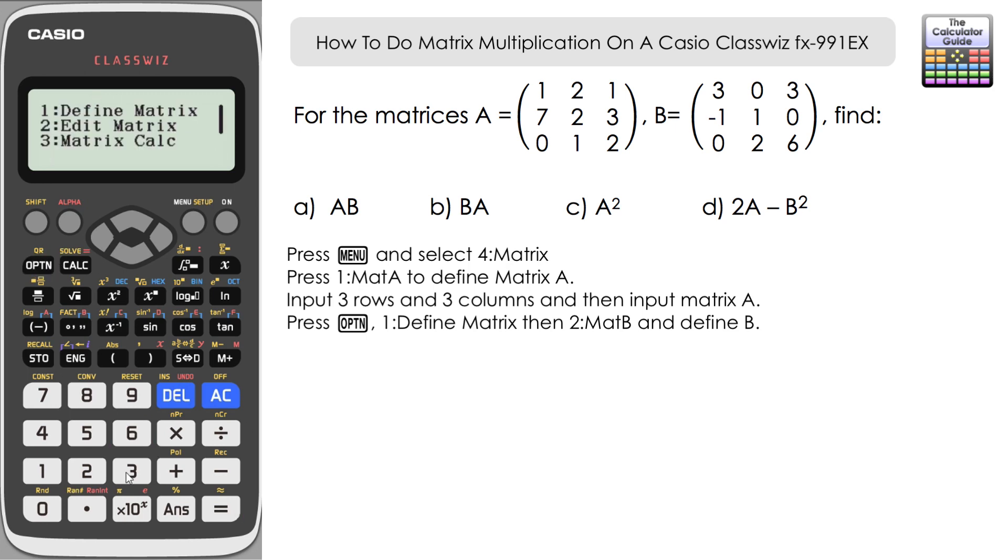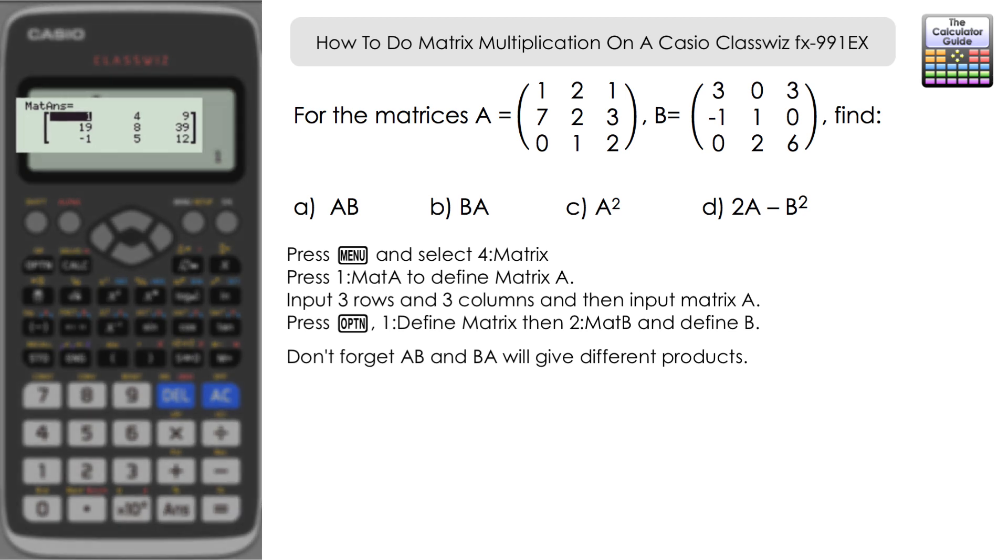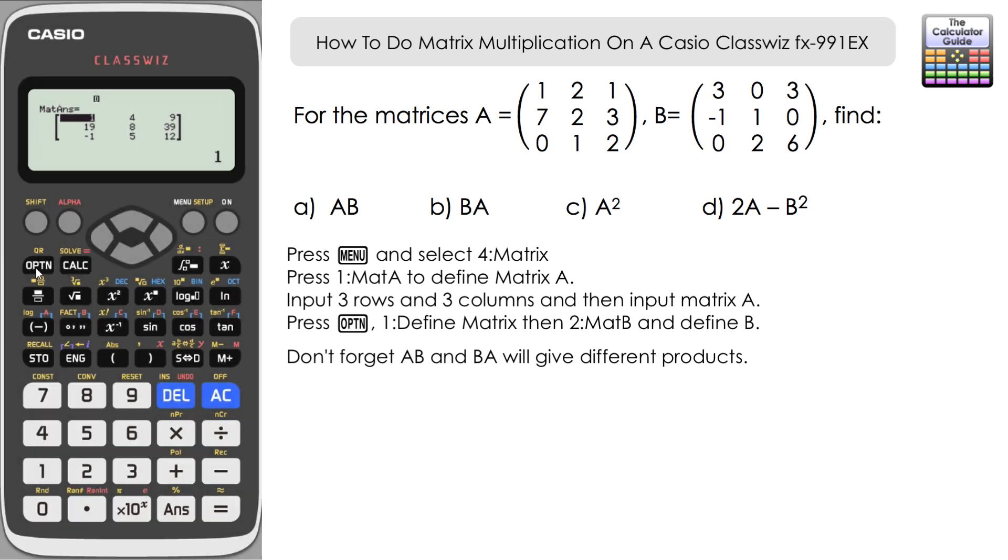It's AB first. Important to get those the right way round as we have AB for part A and BA for part B. So here's our answer to part A, A multiplied by B. And here's our solution.